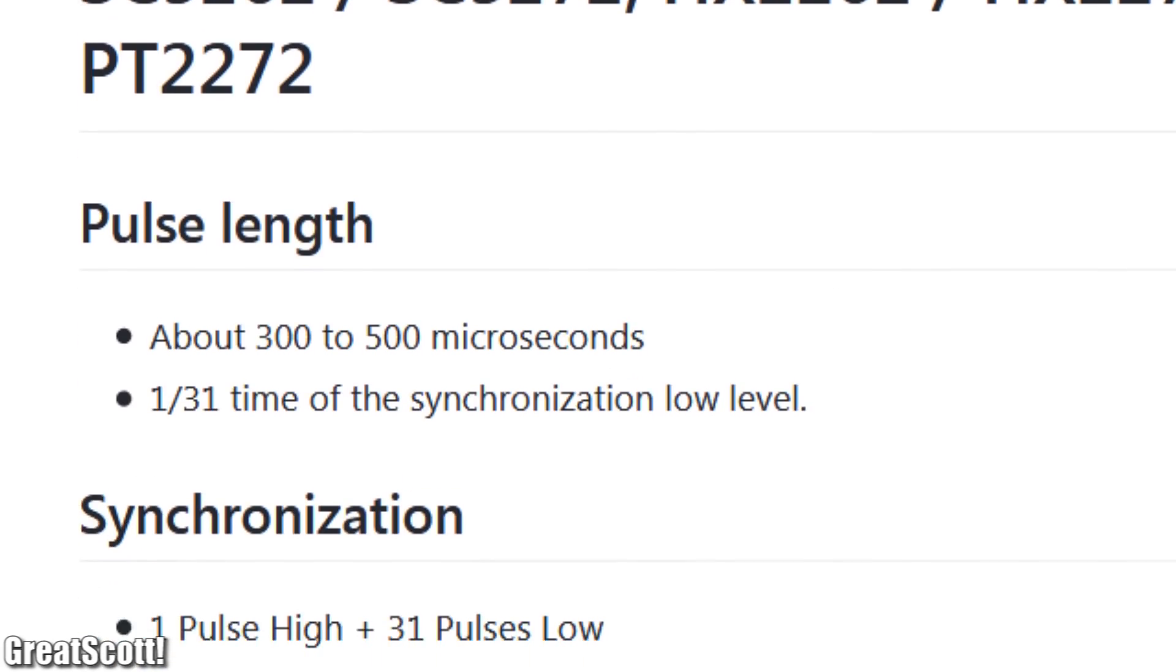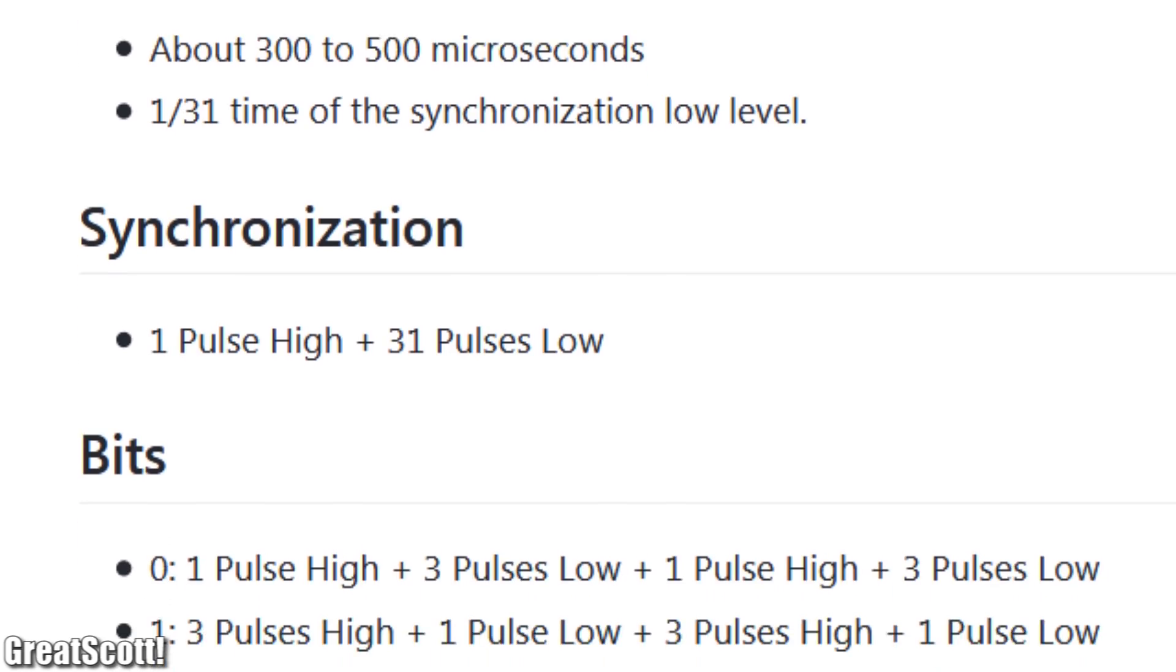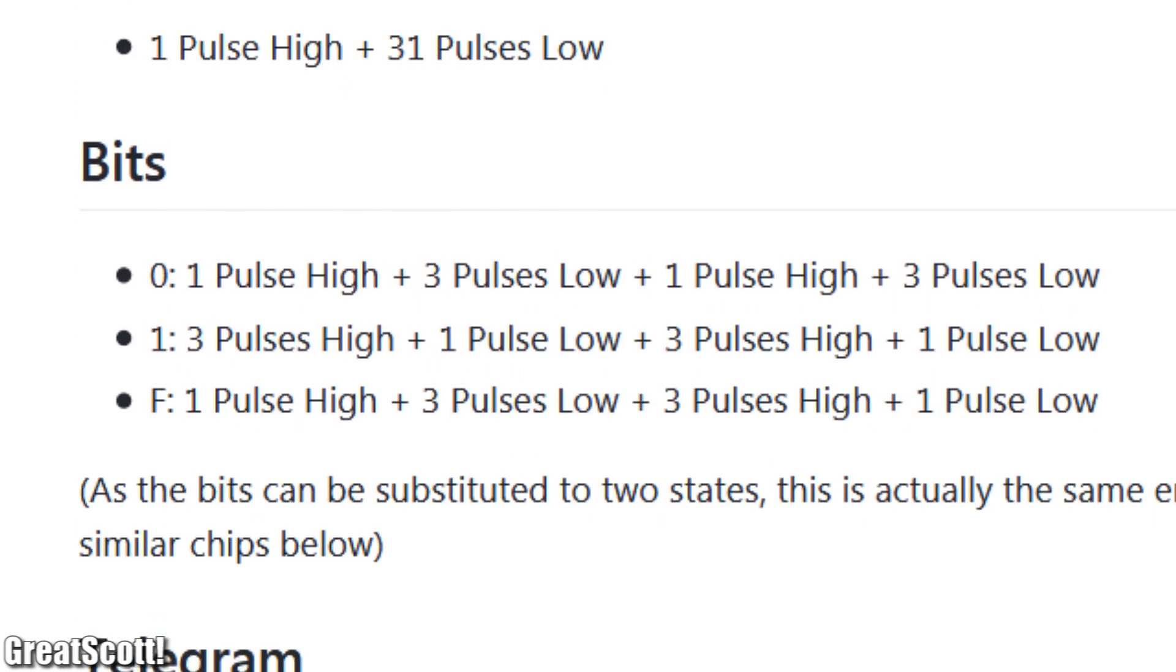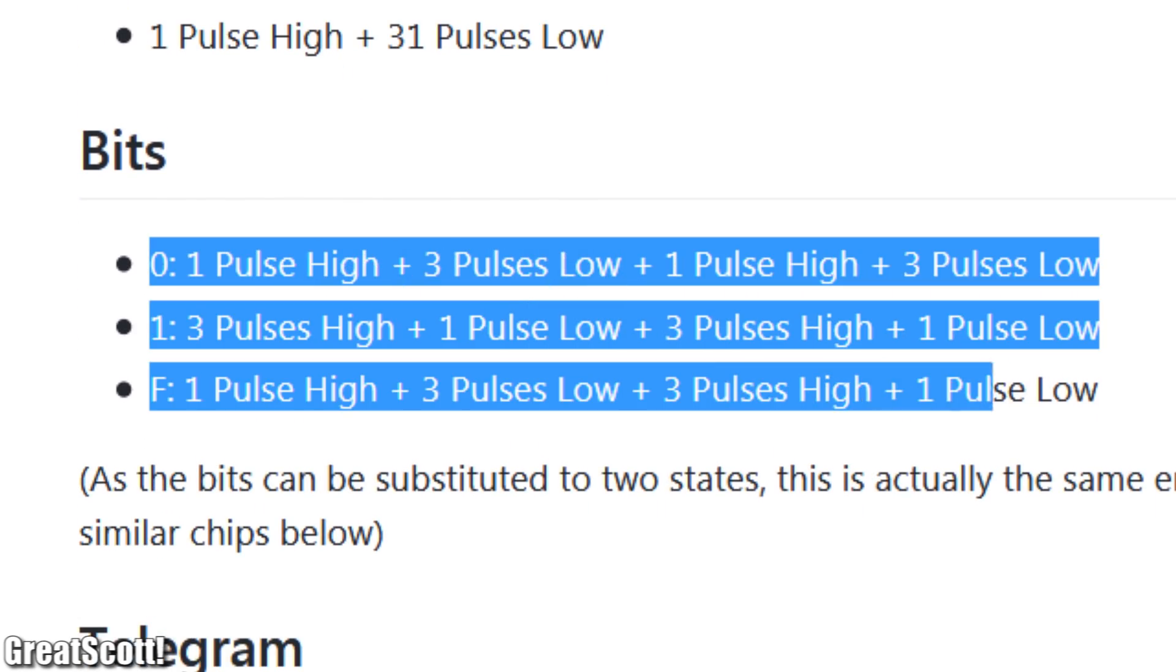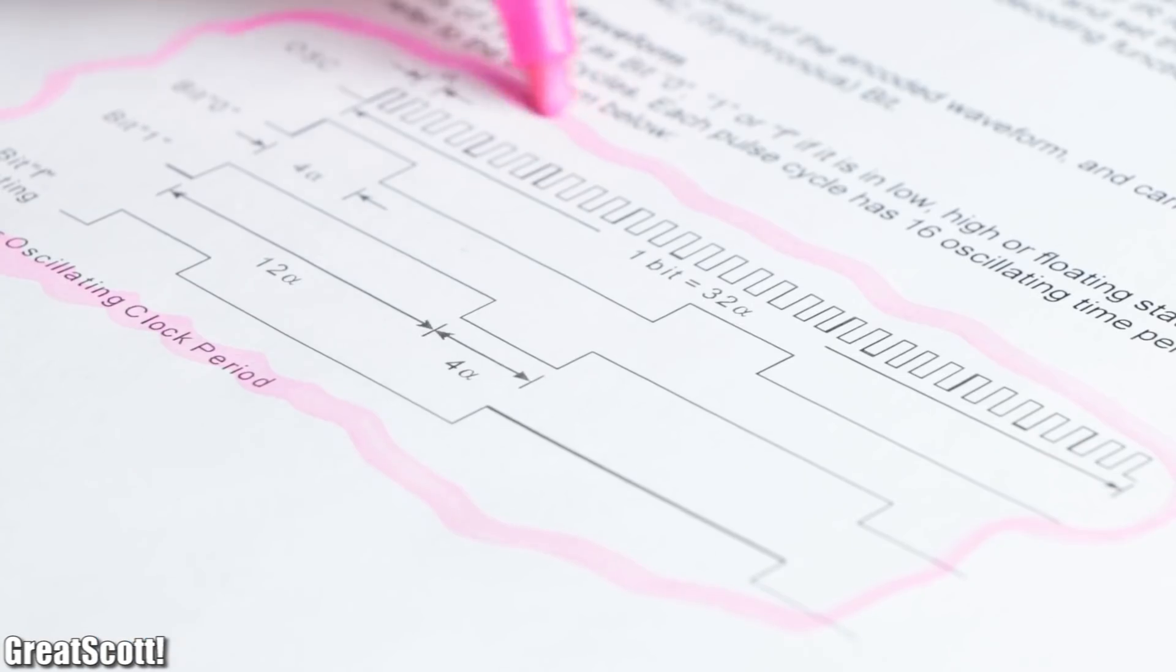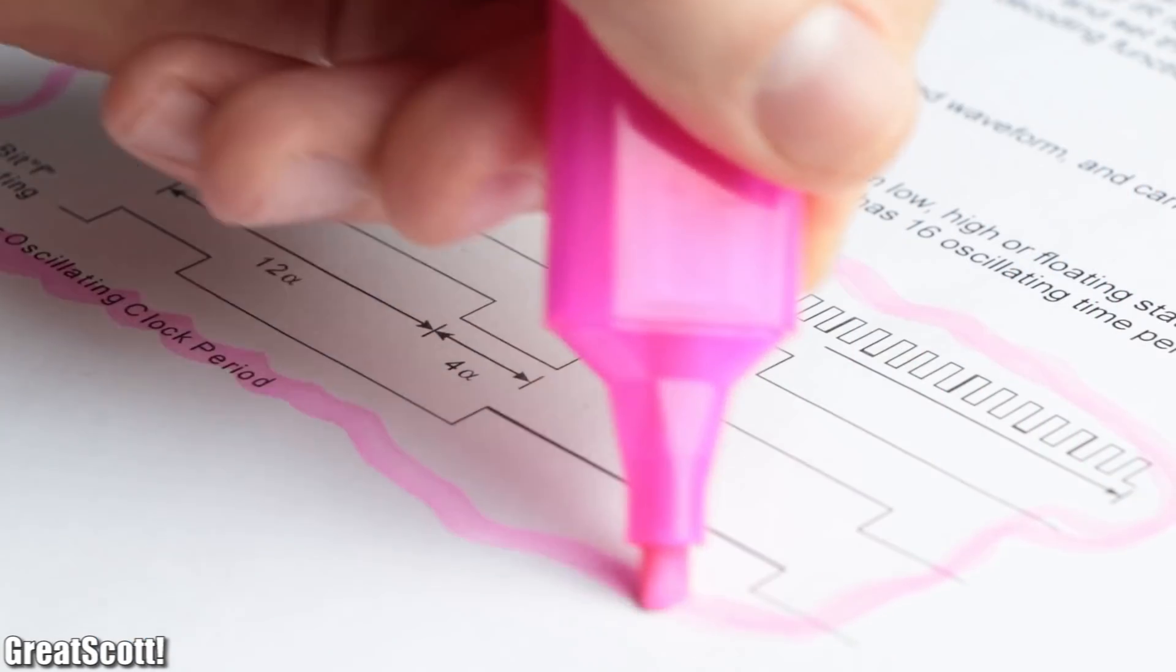But of course depending on what kind of IC your RF transmitter and receiver uses this data encryption can be a bit different but the data sheet should always give you more information on that.